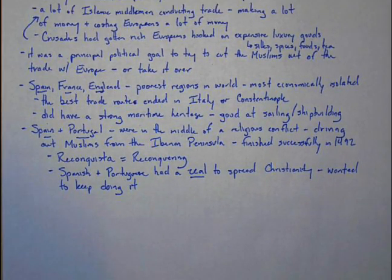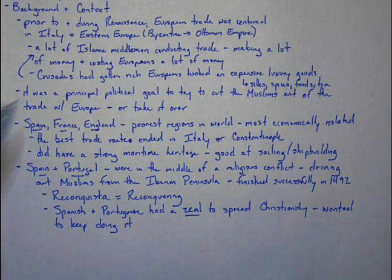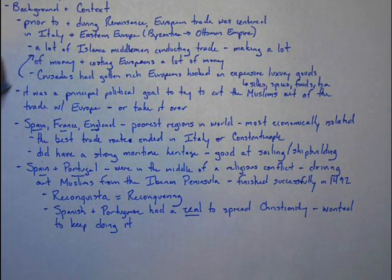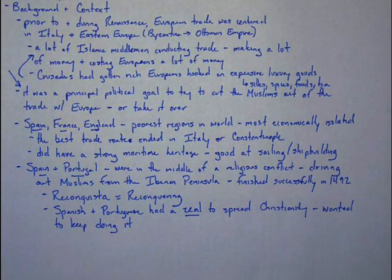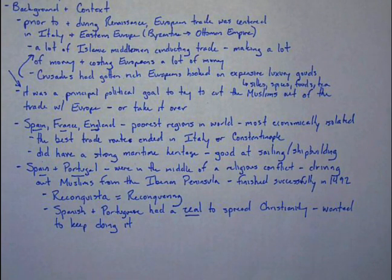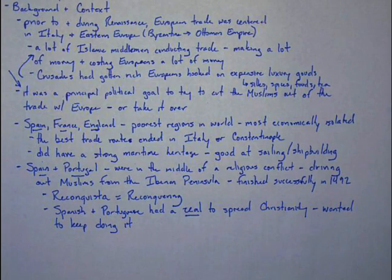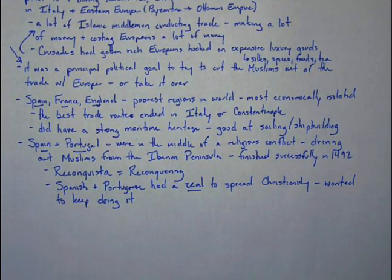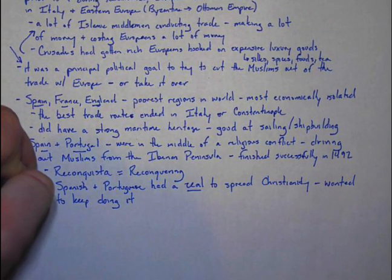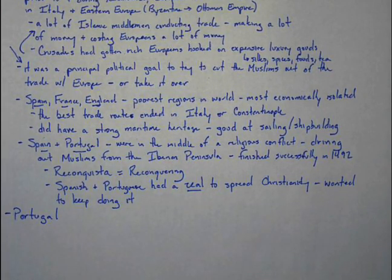This sets the stage for what we're about to cover. The big goal was to try to cut the Muslims out of the long-distance trade routes going from China to Italy — to cut the Muslims out as middlemen so that the Europeans could be the middlemen, or just eliminate them entirely. This process begins with Portugal.